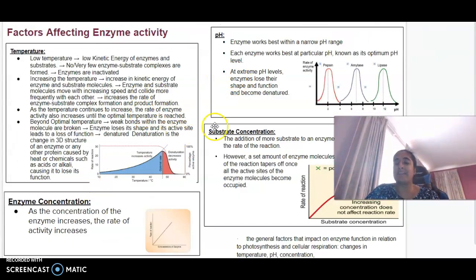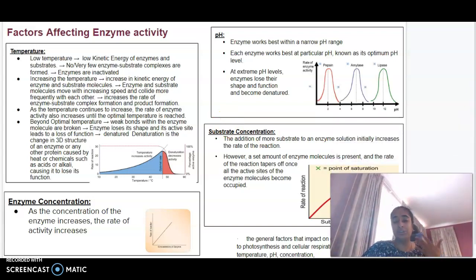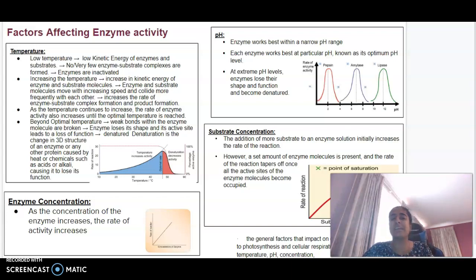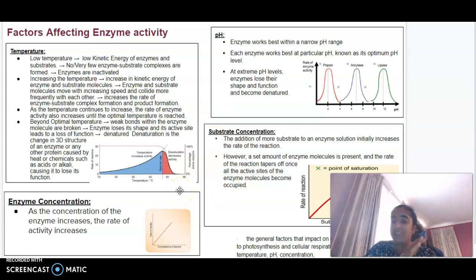In terms of factors that might affect enzyme activity, we know that enzymes are biological catalysts used to speed up reactions and reduce the activation energy required for a reaction to occur. There are four things that can affect the activity of enzymes: temperature, pH, enzyme concentration, and substrate concentration. In terms of these affecting photosynthesis and respiration, if these are changed, then the outcome of those metabolic processes is going to be changed as well.